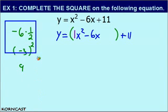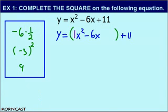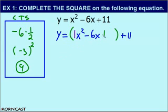And that is the completing the square process. The whole point is to get this number, 9. If we add 9 to x squared minus 6x, we will get our perfect square trinomial. Now remember, if we add 9 to our equation, we also have to subtract 9, because 9 minus 9 is 0.